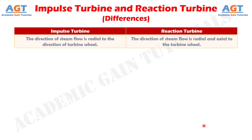Number 8: The steam flow in impulse turbine is radial to the turbine wheel. Whereas, in reaction turbine, the steam flow is radial and axial to the turbine wheel.